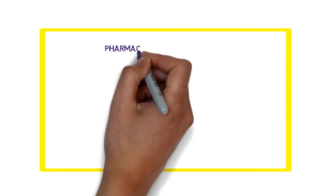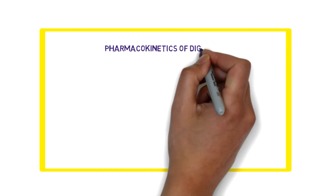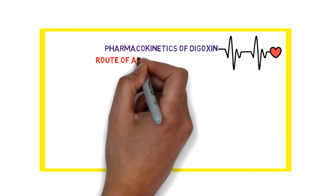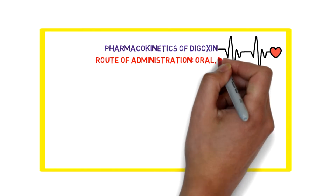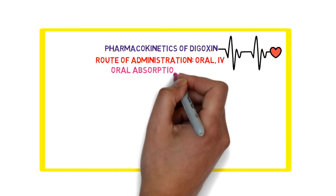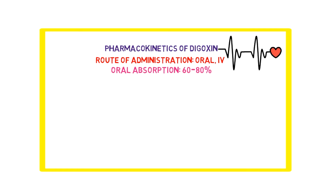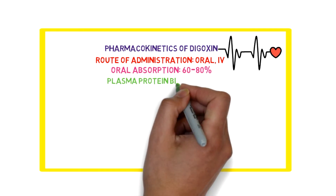In this video we are going to see the pharmacokinetics of digoxin. Digoxin is given via oral and IV routes. The oral absorption of digoxin is 60 to 80 percent, and the plasma protein binding is 25 percent.